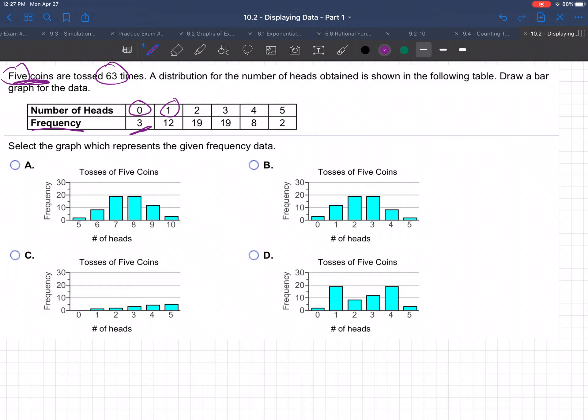They got one head out of five 12 times, two heads 19 times, three heads 19 times, four heads out of five 8 times, and they got all five heads twice out of the 63 times.